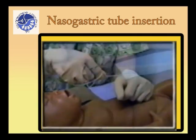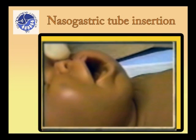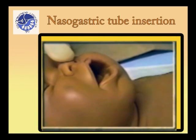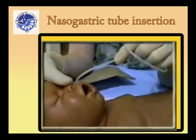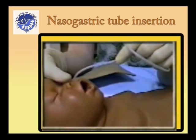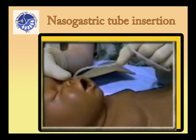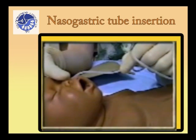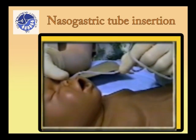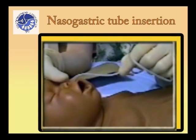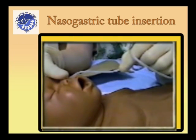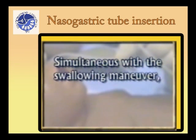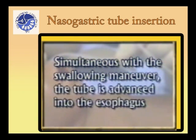The tip of the nose is pressed upward with the operator's free thumb. This enlarges the external nasal opening. Slide the tube into the nostril along the base of the nose, aiming toward the occiput. When the tube reaches the pharynx, ask the patient to swallow or offer him water to drink with a straw. Simultaneous with the swallowing maneuver, the tube is advanced into the esophagus.